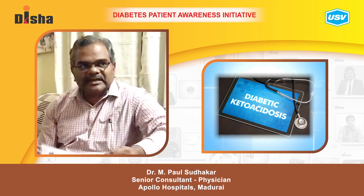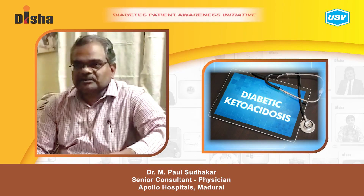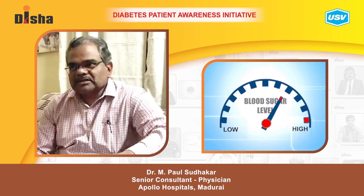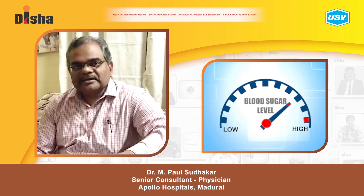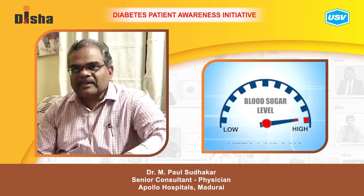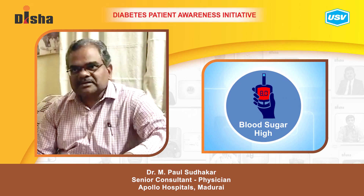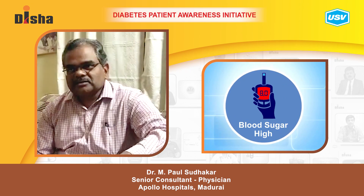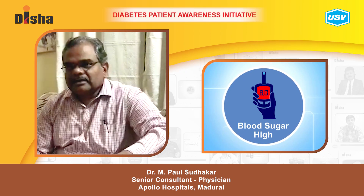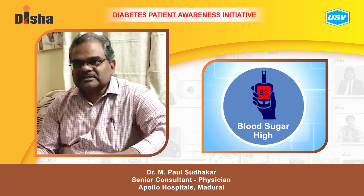The second diabetic emergency is diabetic ketoacidosis. This is exactly the opposite of hypoglycemia. It is due to a very high level of blood sugar — more than 500 or 600 — which leads to many pathologies in the body. It leads to ketosis, with excess ketones in the blood, causing the pH to fall below 7.4, which is called acidosis, along with reduced carbohydrate reserve in the blood.